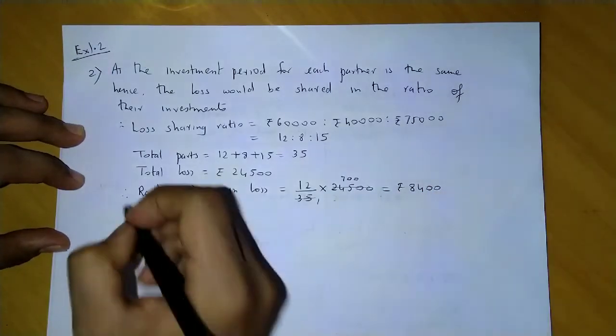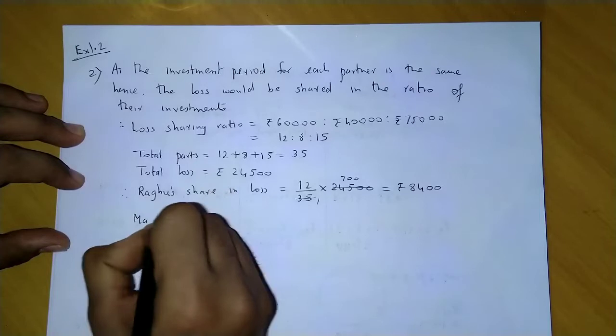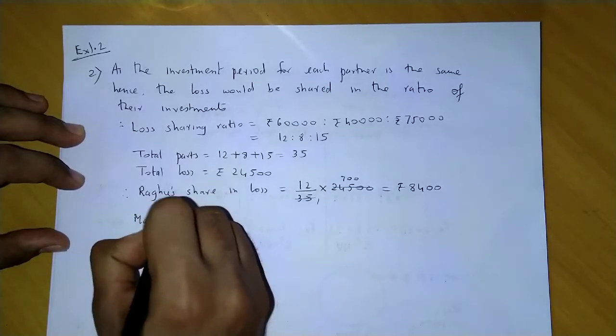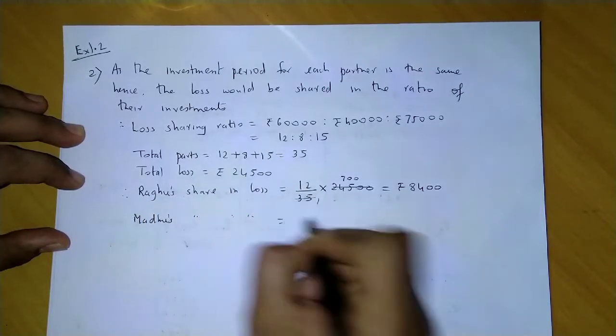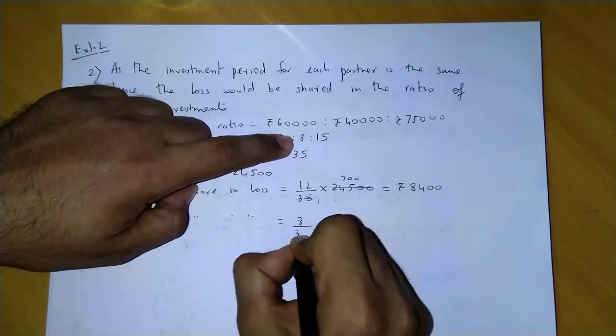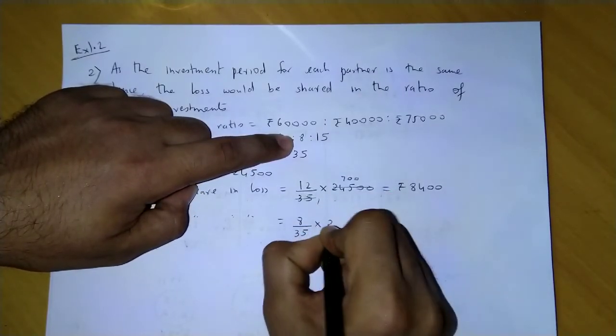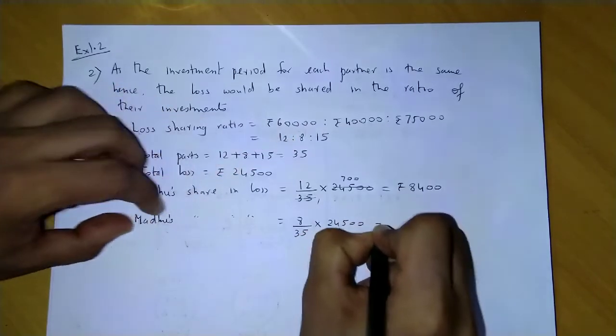After Raghu comes Madhu. Next we will find Madhu's share in loss. Madhu would receive 8 parts out of 35 into 24,500.